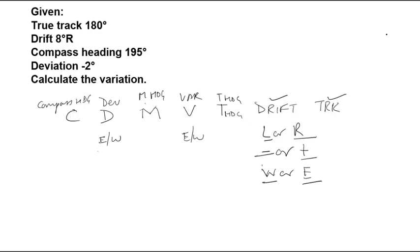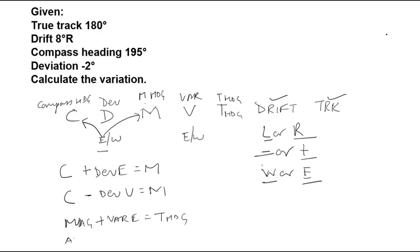In case deviation is East, then this value will be added to C, that is compass heading to get magnetic heading. That means C plus deviation East is equal to magnetic. Or C minus deviation West is equal to magnetic. Similarly, magnetic plus variation East is equal to true heading, or magnetic heading minus variation West is equal to true heading.